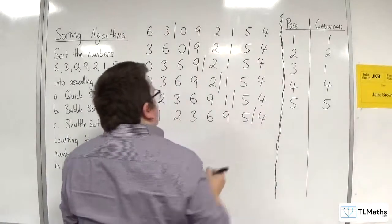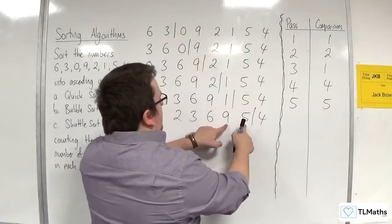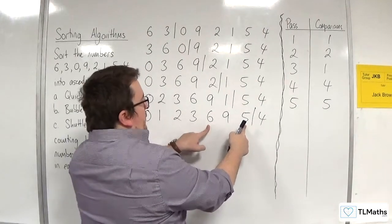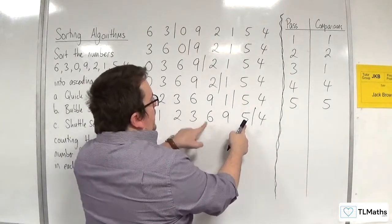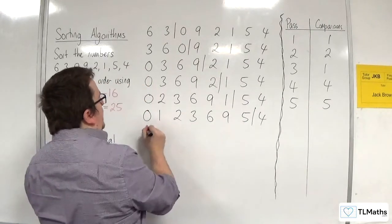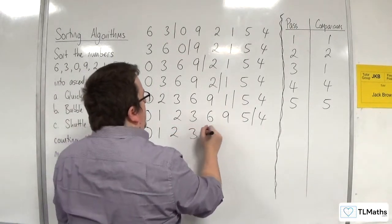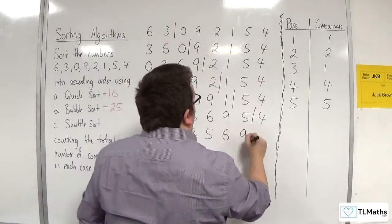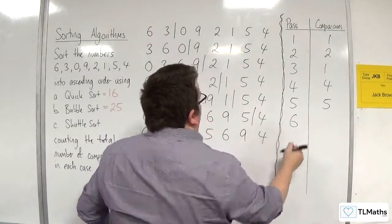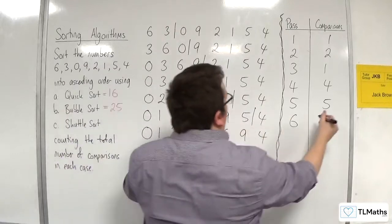Now we bring in 5. 5 gets compared with 9 and they swap, then 5 gets compared with 6 and they swap, then 5 gets compared with 3 and they don't swap. So 0, 1, 2, 3, 5, 6, 9, 4. On the sixth pass, we made 3 comparisons.